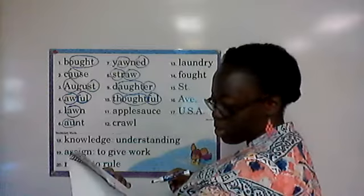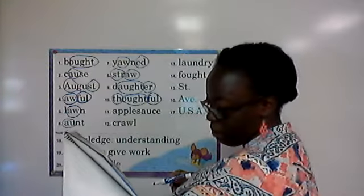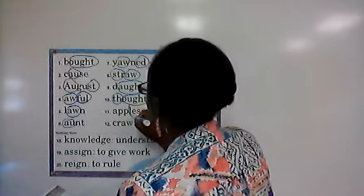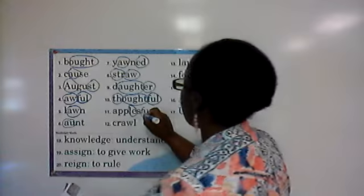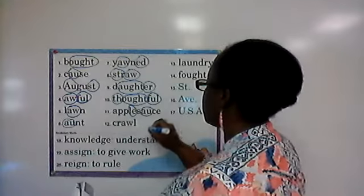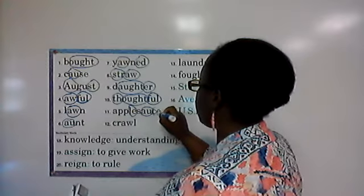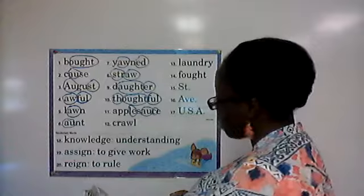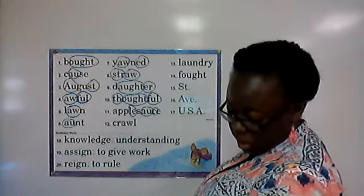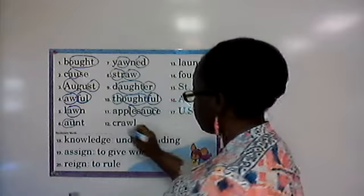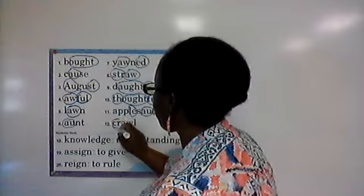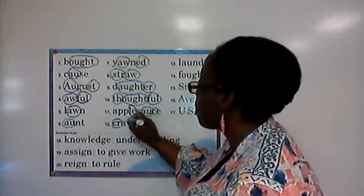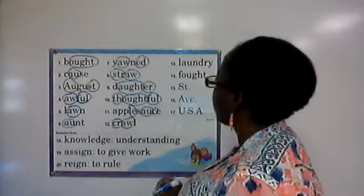In the word applesauce, we have 'le' as in little: L-E, and 'au' as in faucet: A-U. We also have 'ce' as in city. In the word crawl, we have 'cr' as in crab: C-R, and 'aw' as in saw: A-W.